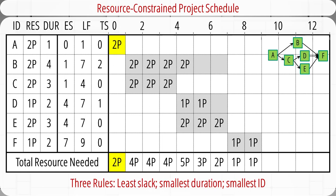Let's use heuristics to find the resource-constrained project schedule. We're good for the first week because we have three programmers, which is more than the two needed. For the time between weeks 1 and 2, we start to have a resource shortage — we need four programmers but only have three. We need to decide which of the two activities, B or C, should be scheduled first.